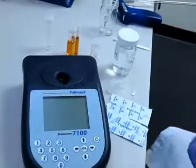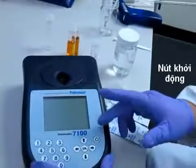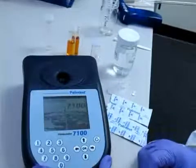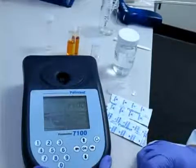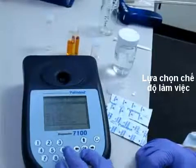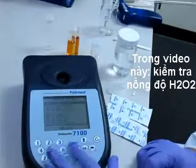This is a short tutorial on the Palintest Photometer 7100. The on-off switch is here, press that button to operate. Then choose a test from the drop-down menu. I'm going to choose the hydrogen peroxide 100, so it'll read zero to 100.